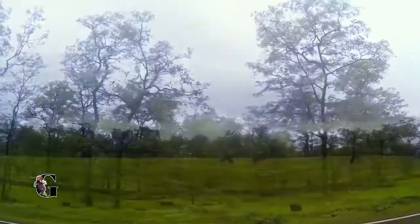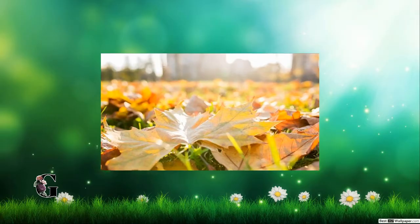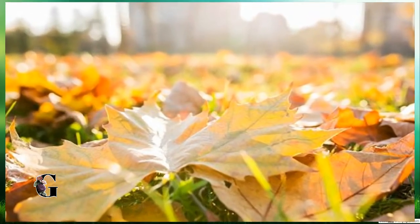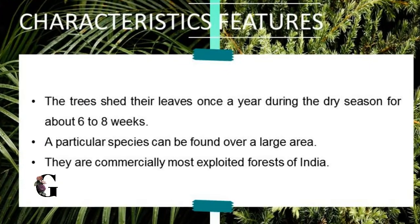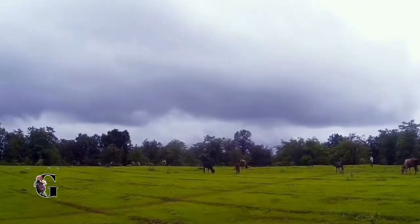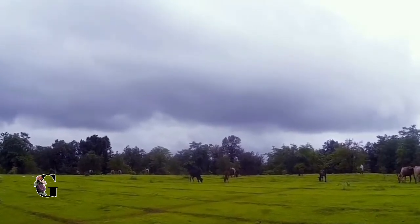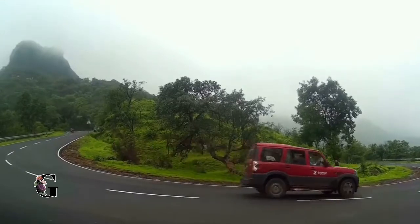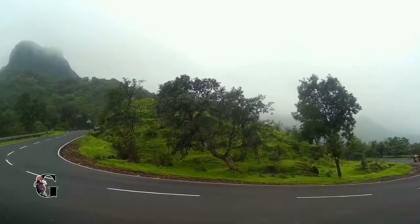The term deciduous is often referred to as 'falling off at maturity,' indicating the process of shedding. The trees shed their leaves once a year during the dry season, for about six to eight weeks. Also, the moist deciduous forests are the commercially most exploited forests of India.